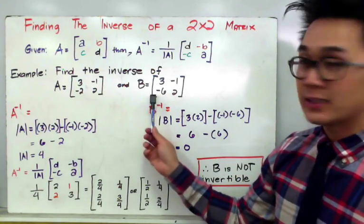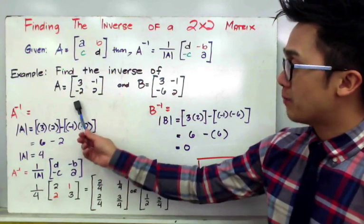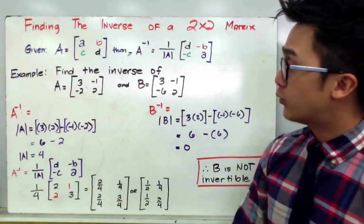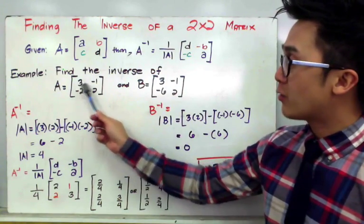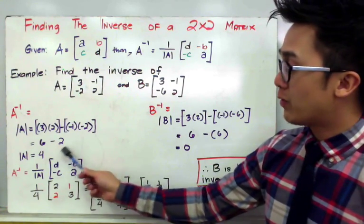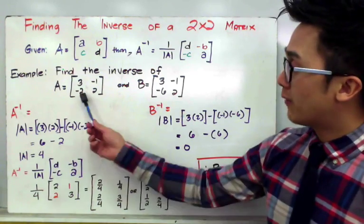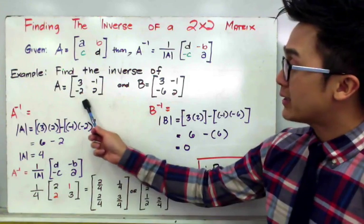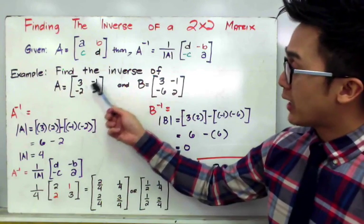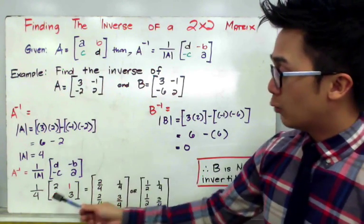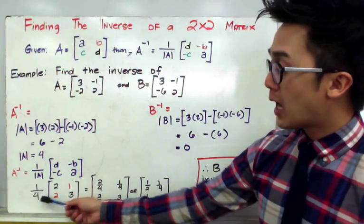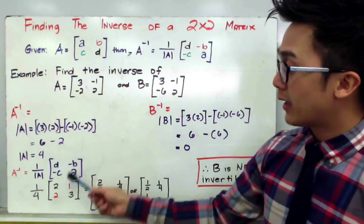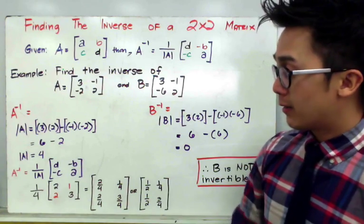Let's find the inverse of matrix A given by 3, negative 2, negative 1, and 2. First, we find the determinant: 3 times 2 is 6, and negative 1 times negative 2 is 2, so 6 minus 2 equals 4. The determinant of A is 4. Now we transform matrix A by interchanging the positions of 3 and 2, and changing the sign of negative 1 and negative 2. So we get 1 over 4 times the matrix 2, 2, 1, 3.